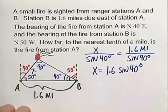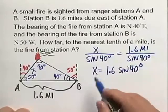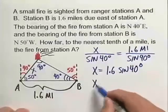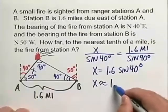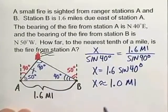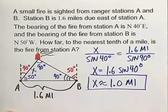So if we round this to the nearest tenth of a mile, we are going to have x is approximately 1.0 miles once we have rounded. And again, that is the distance that station A is from our fire.